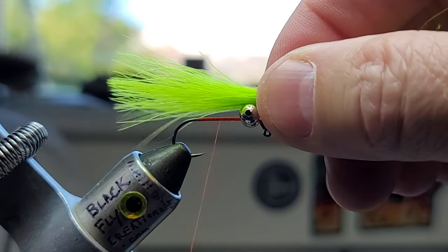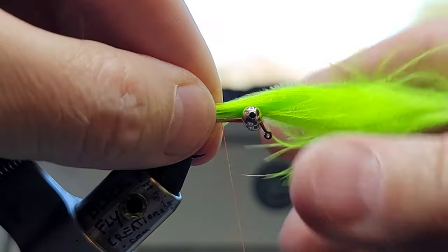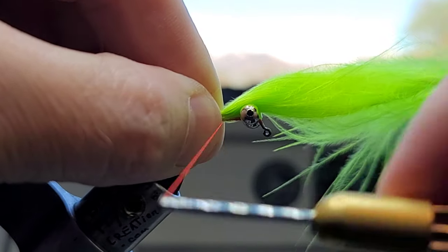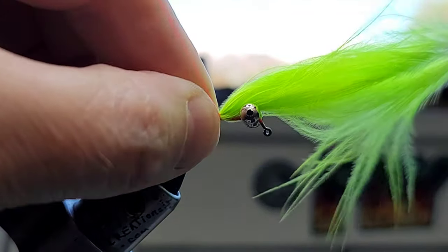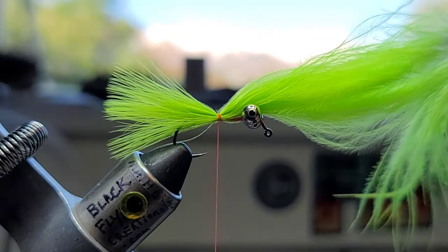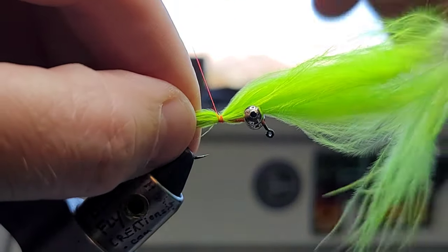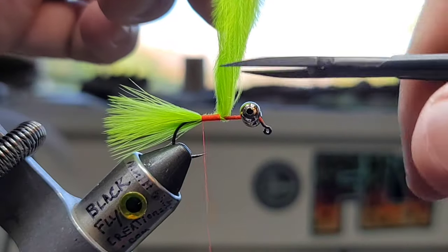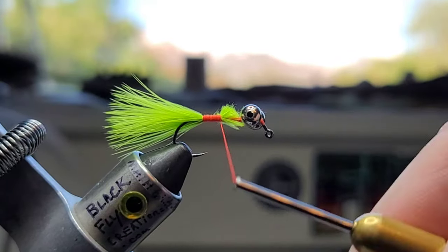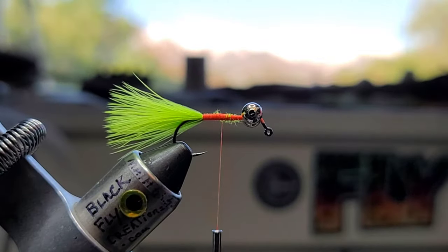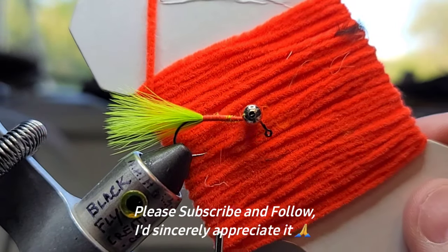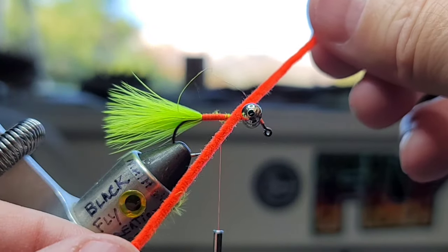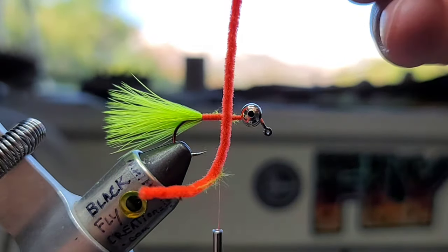I've got some chartreuse here. I want it to stick out about half the length of the shank, so I'm just going to kind of eyeball it here. I'll just pin trap that, loosely wrap that a couple times, check my length. That looks good. We'll trim this off and clean this up.